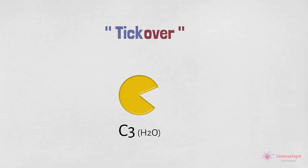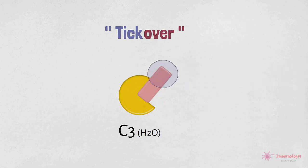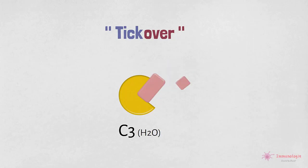La conformation de C3H2O est différente de celle de la protéine mère. Elle est capable de se lier à une autre protéine sérique, le facteur B. Le facteur B, sous cette forme liée, devient sensible au clivage par une protéase sérique appelée le facteur D. Ce dernier clive le facteur B, libérant une petite sous-unité Ba qui se diffuse, et une sous-unité Bb plus grande qui reste liée au C3H2O.